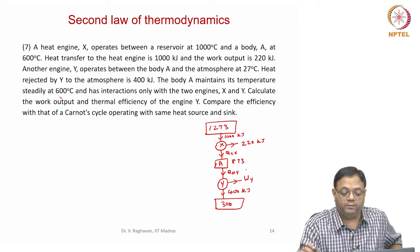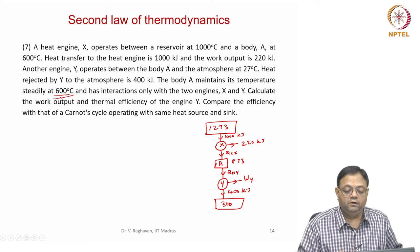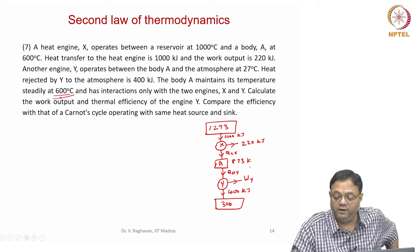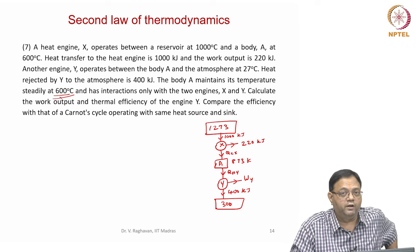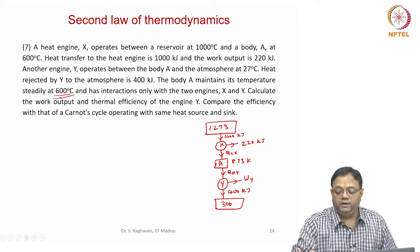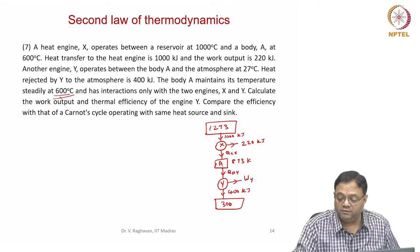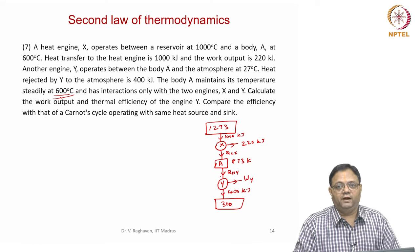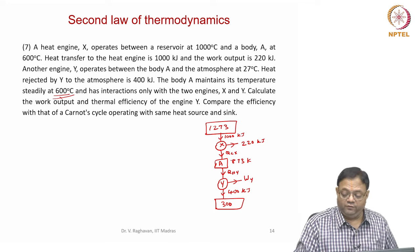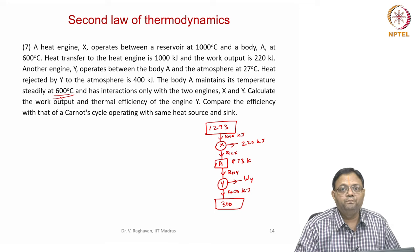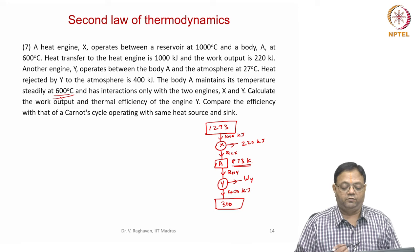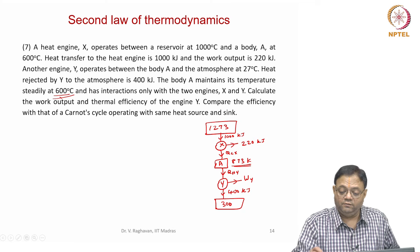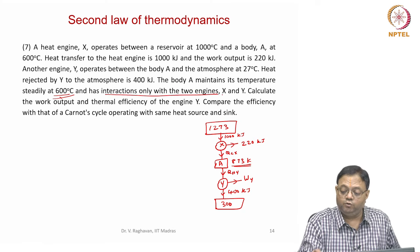Body A maintains its temperature steadily at 600 degrees centigrade, that is 873 Kelvin. Since A is a finite body with finite mass and heat capacity, some heat coming in tends to raise the temperature while heat rejected to Y tends to lower it. The temperature is maintained only if these heat interactions are equal. Body A has heat interactions only with the two engines.